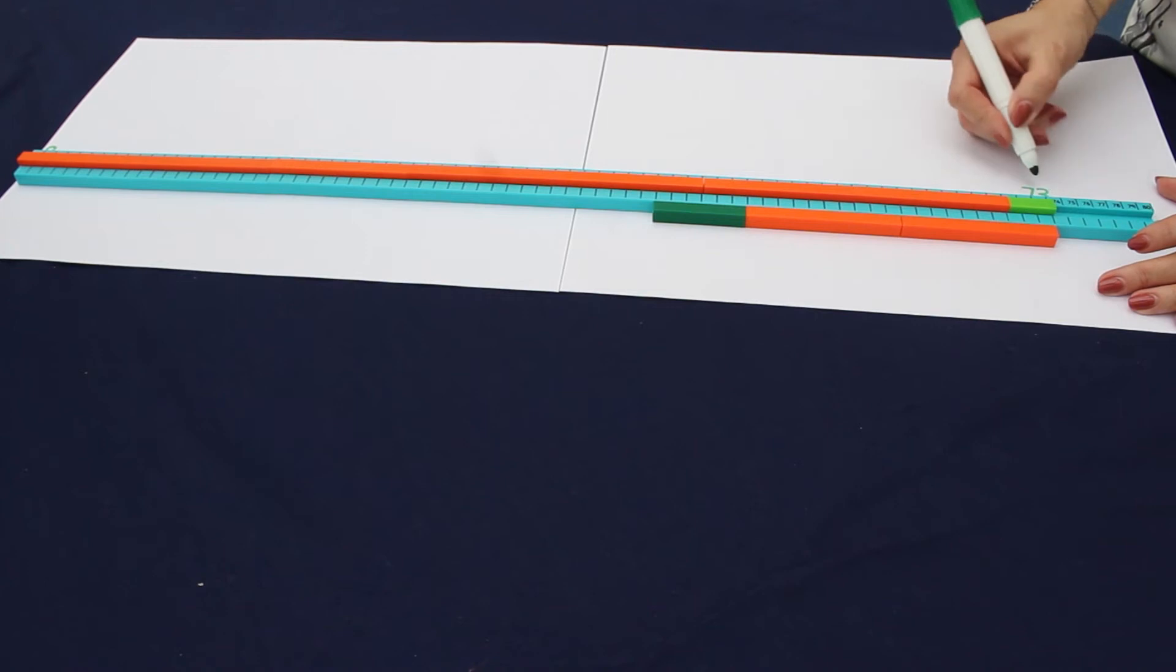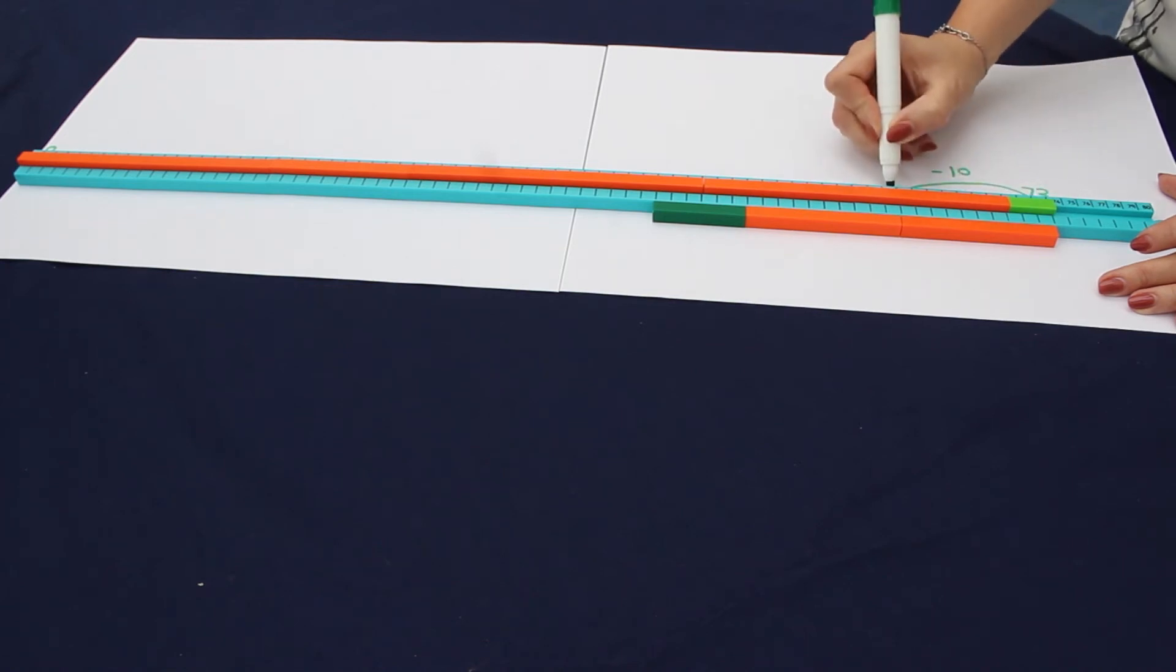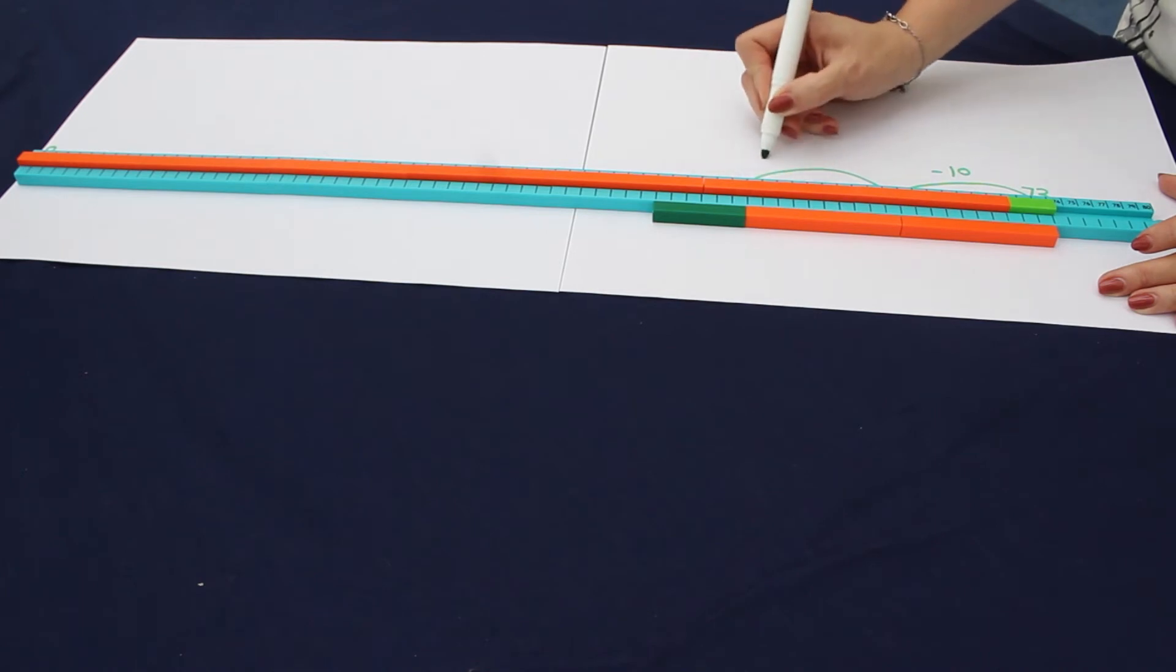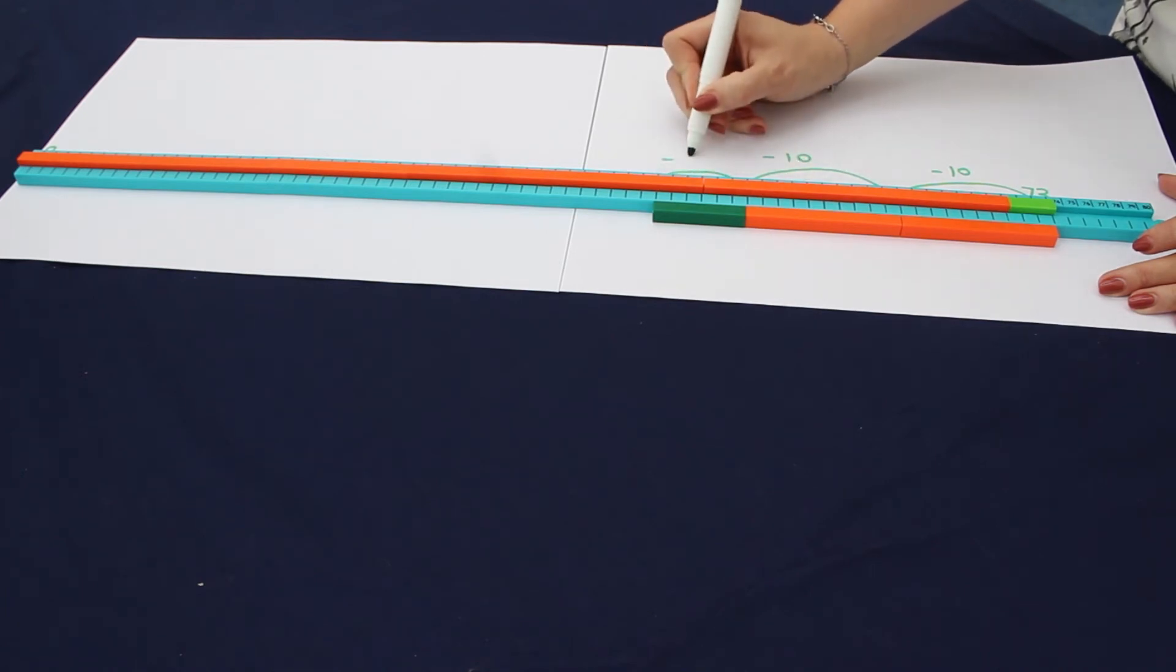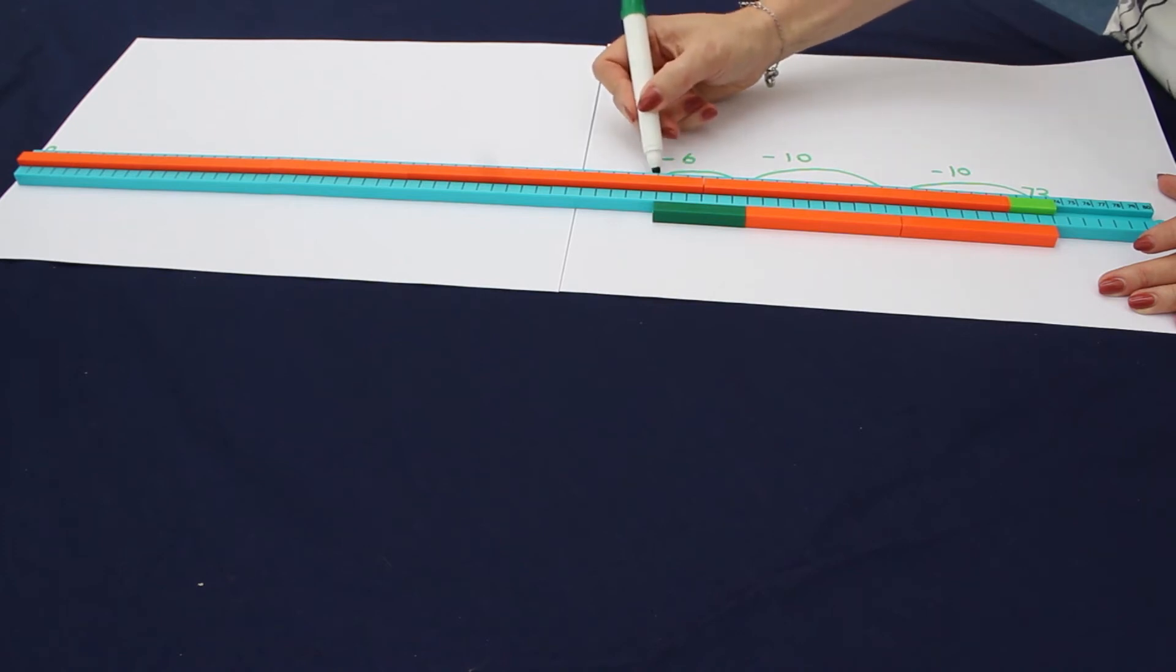So here we've got 73. I've marked 73 on the number line and we're going to take away 26. So we take away 10, take away another 10, and then we're going to take away 6, and our answer is 47.